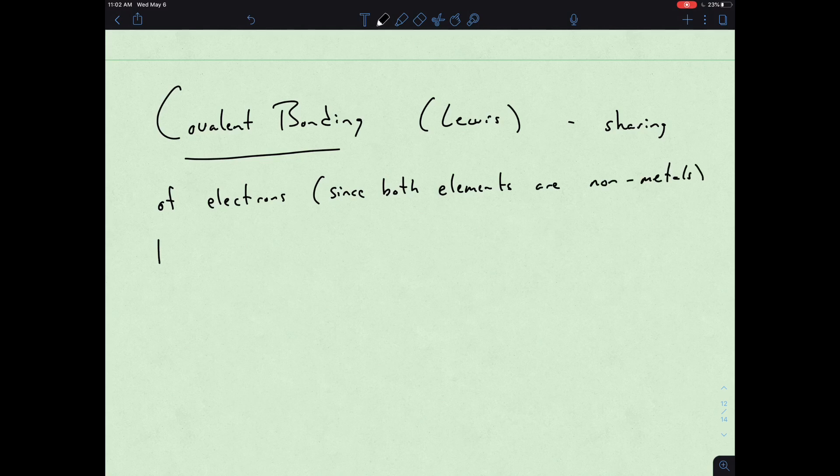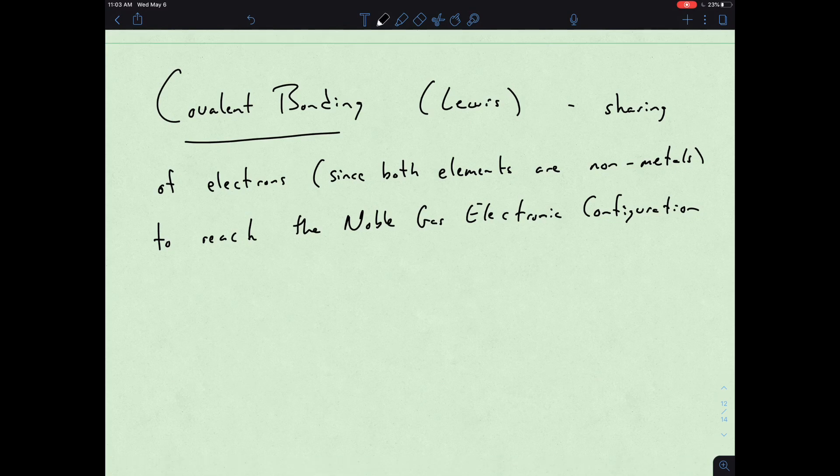The sharing of electrons to reach the noble gas electronic configuration. Still the same driving force in terms of ionic bonding with loss or gain of electrons, but here since we have elements in the same region of the periodic table that like to do the same chemistry, they decide to meet somewhat halfway and share electrons. This basically explains why some elements are diatomic.